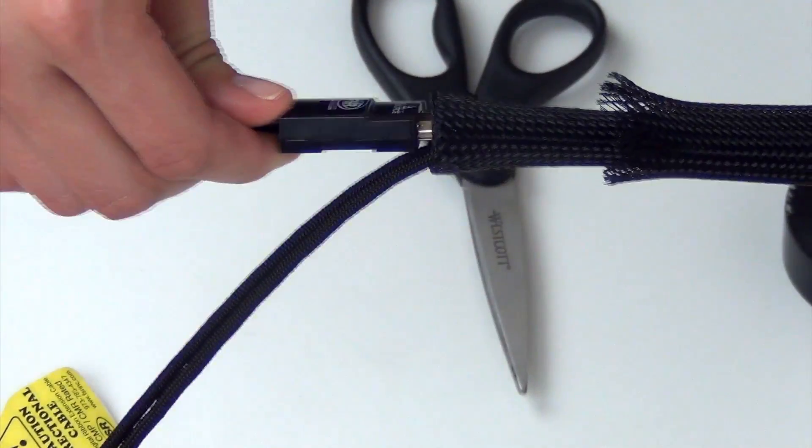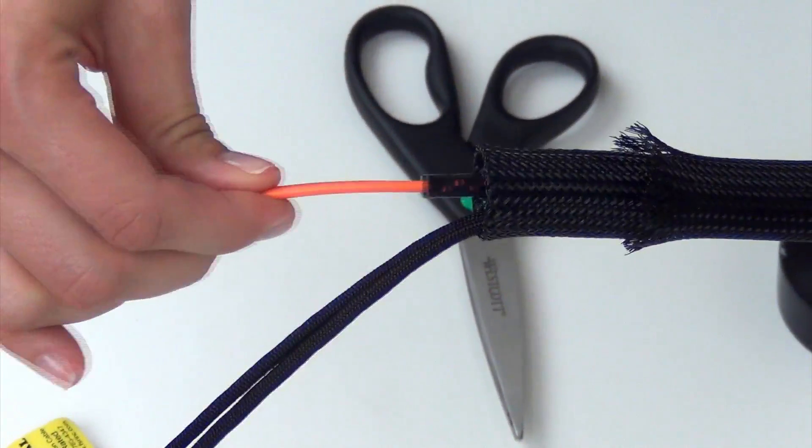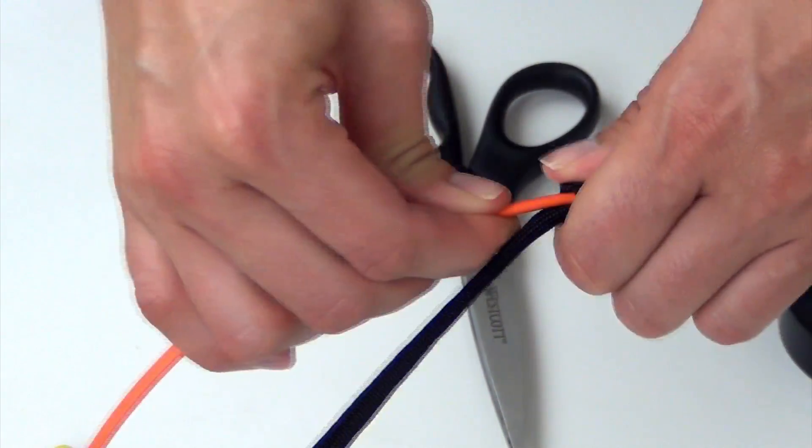Next, you'll want to line up the connector and the puller and insert it into the inner braid. Push the connector into the inner braid until it is fully seated inside.